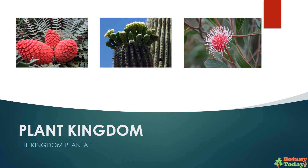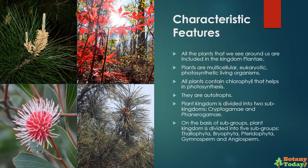Today we are going to study about the plant kingdom, also known as the kingdom plantae. Characteristic features of the kingdom plantae are as follows. All the plants that we see around us are included in one kingdom, i.e., the kingdom plantae. Plants are multicellular, eukaryotic, photosynthetic living organisms. All plants contain chlorophyll that helps in photosynthesis. They are autotrophs as they make their own food.